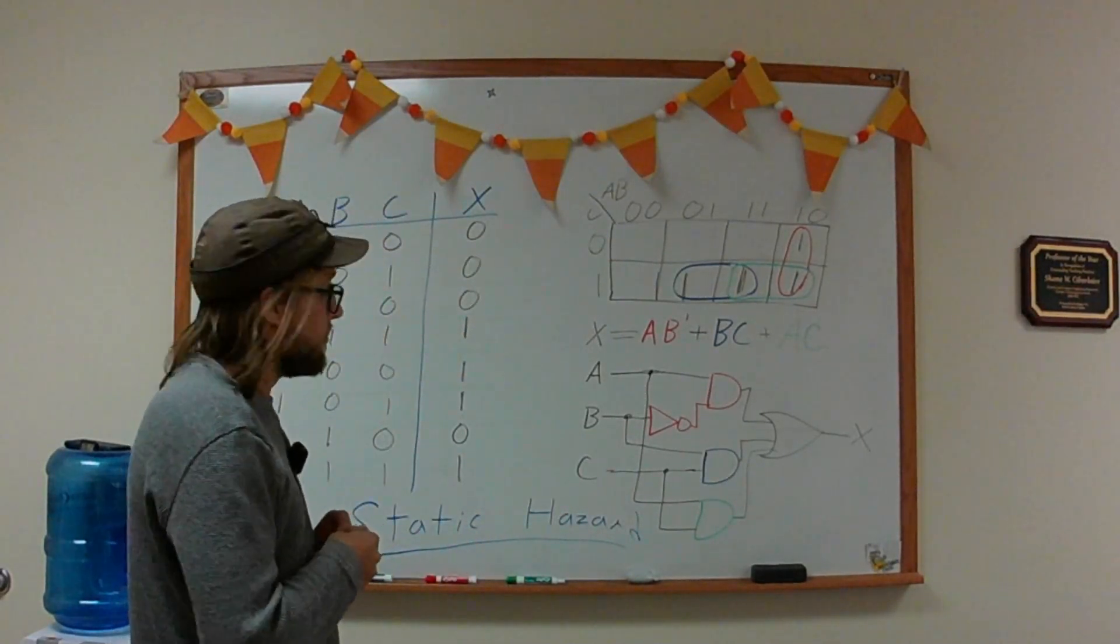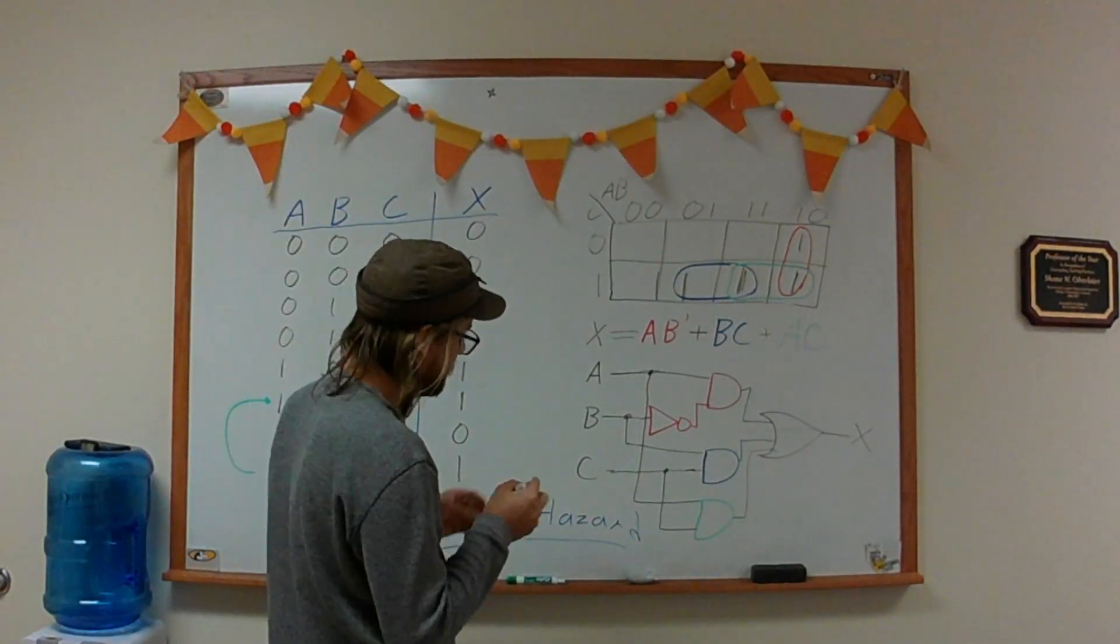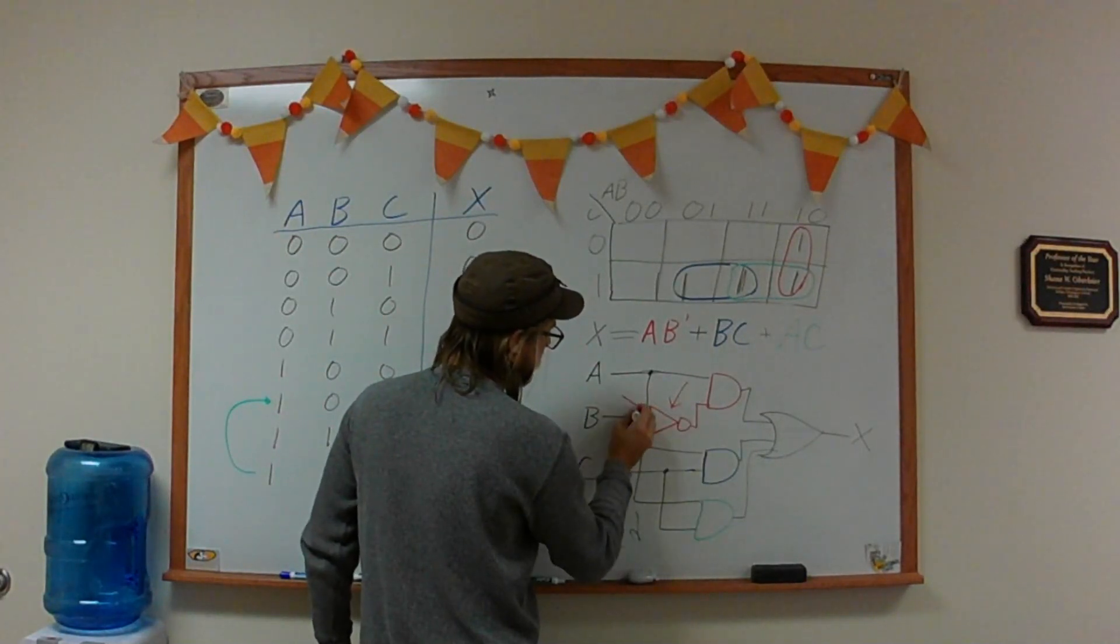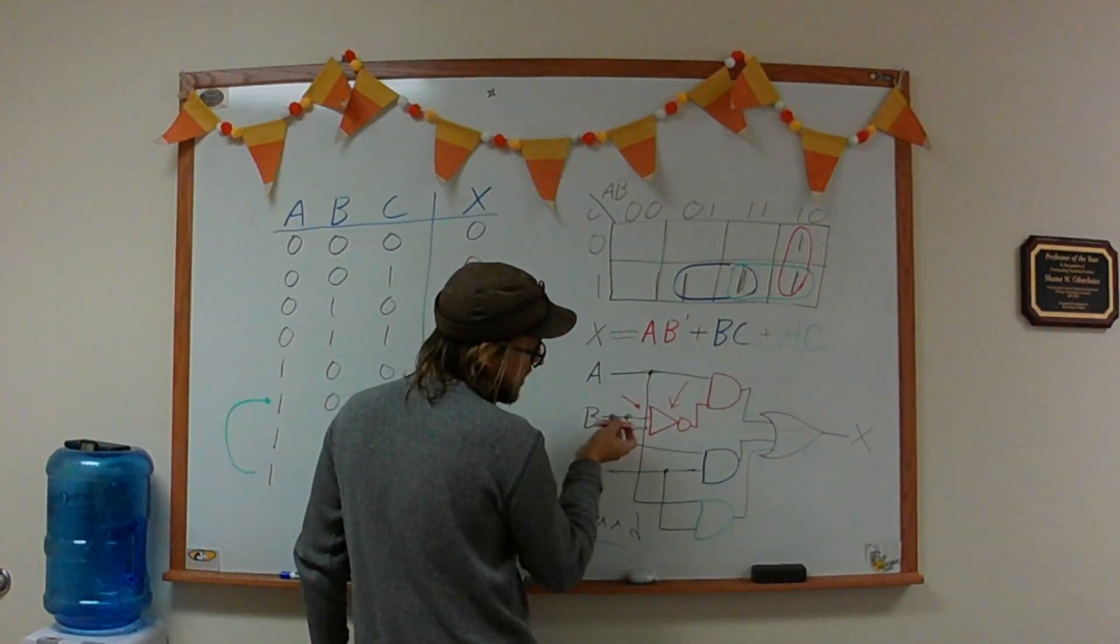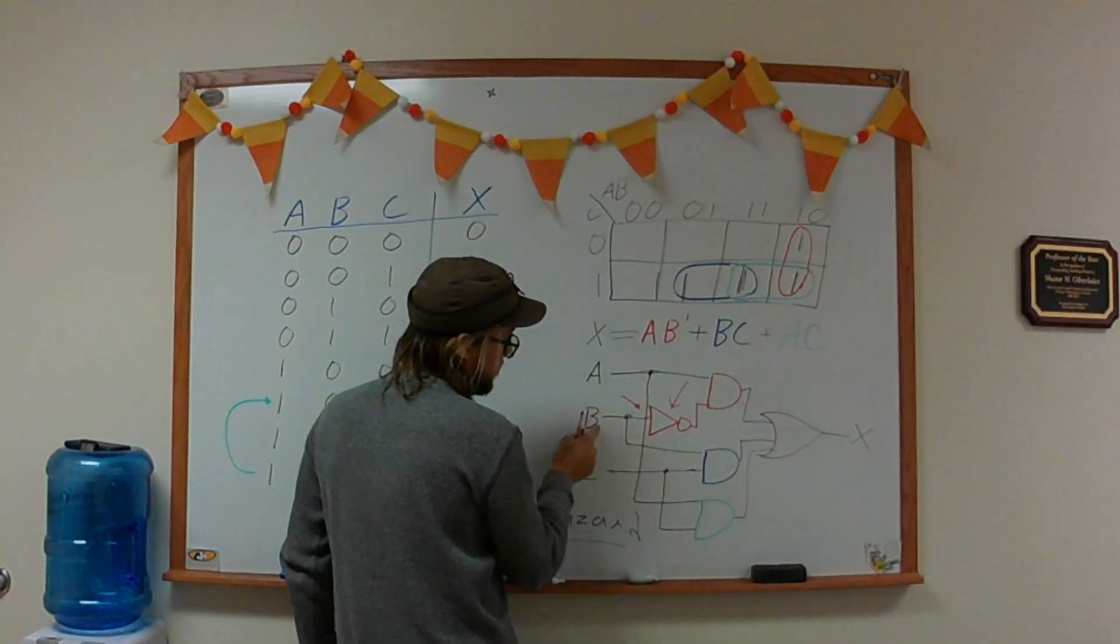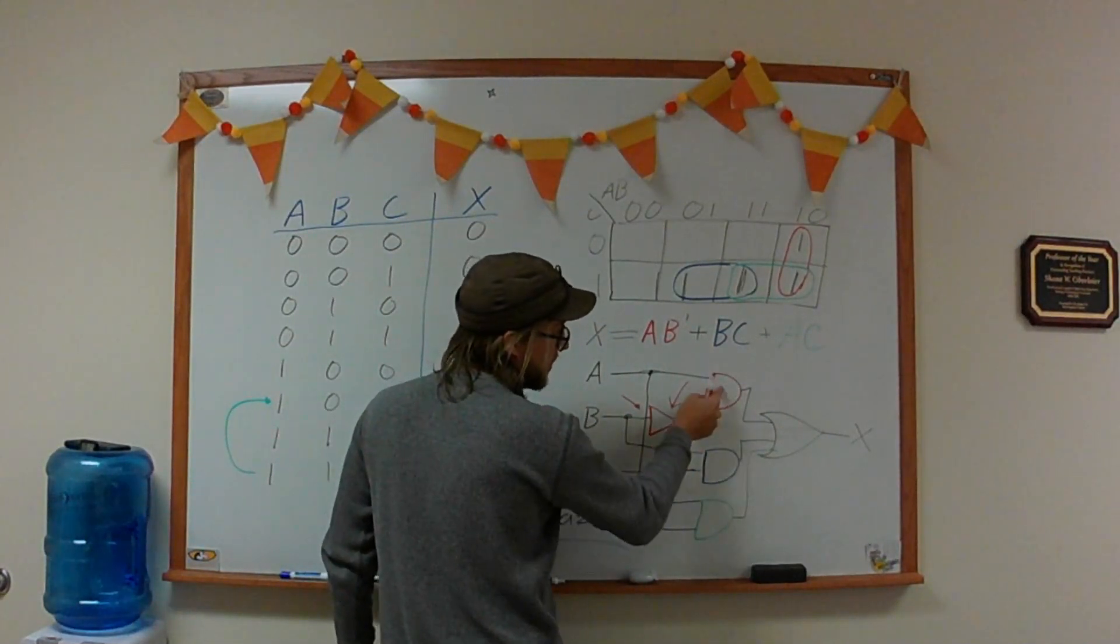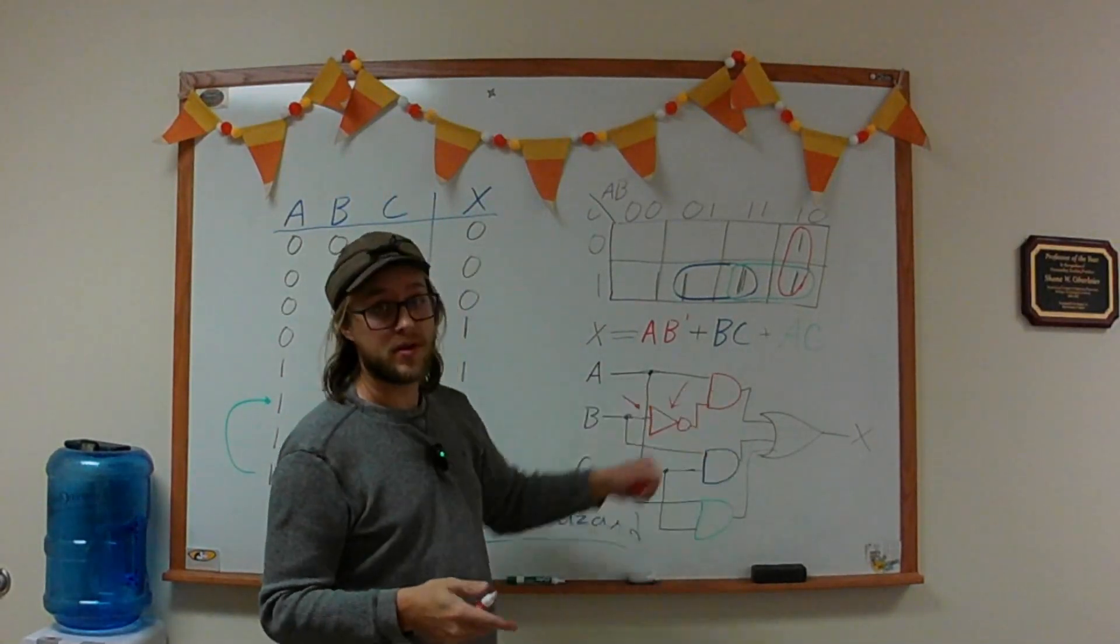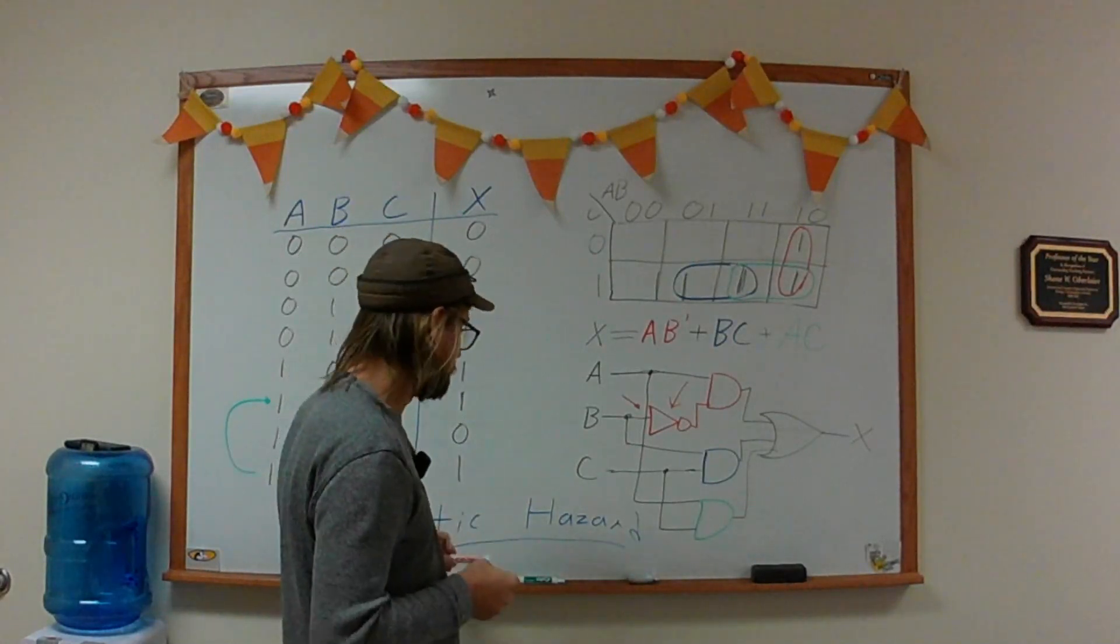Why do static hazards happen? Well, it actually is because of this guy right here. If we think of signal propagation in the way that it goes through here, this NOT causes B to take a little bit of time to change into B' before it can trigger this AND gate, and this AND gate might be off before this one could turn back on. That's the simple way of explaining what's happening with static hazards.